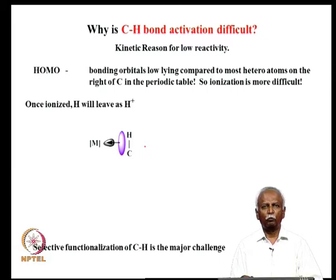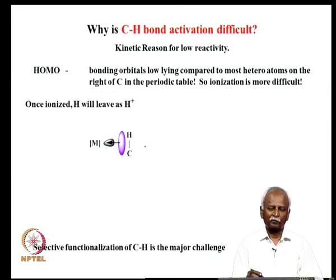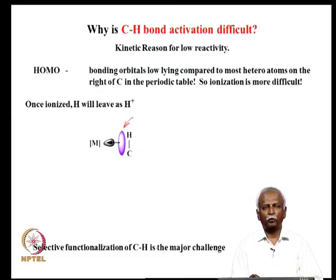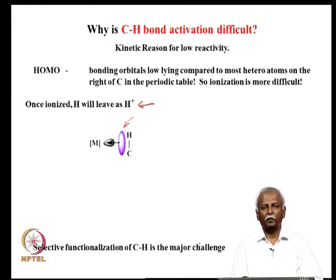On the other hand, we might be able to remove an electron from the C-H bond. The bonding orbitals are low lying, but nevertheless we could find an empty orbital which is hopefully lower in energy than the C-H bond itself. If you remove an electron from the C-H bond, then it would be possible to find an empty orbital on the metal. That would leave it as CH⁺· and it will ionize very readily as H⁺. This is a favorable situation and might be quite feasible. But because the C-H bond is ubiquitous, selective functionalization is a major challenge.